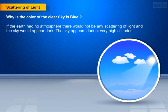If the earth had no atmosphere, there would not be any scattering of light and the sky would appear dark. The sky appears dark at very high altitudes.